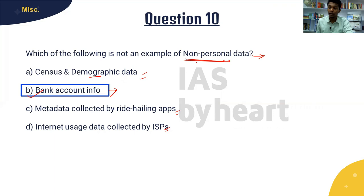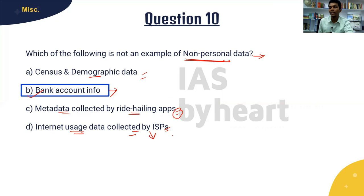Census or demographic data covers a community as a whole and no single person can be identified, so it is non-personal data. Metadata collected by ride-hailing apps is usually traffic or movement data that cannot be linked to a specific individual — someone else with your phone might use it. Internet usage data also collects data used by your device, not uniquely by you — your friends or family may have used it too — so no personal information can be derived.